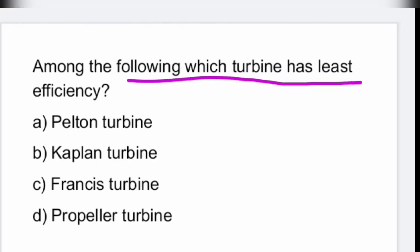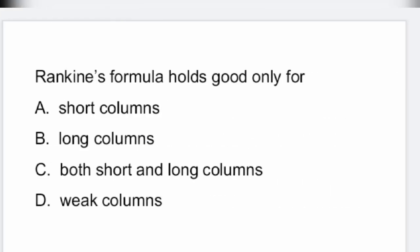Next: among the following, which turbine has the least efficiency? The least efficiency is possessed by the Pelton wheel. Option A is the right answer.